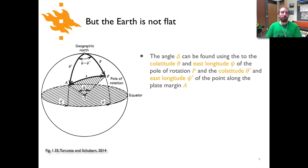In order to solve this we need to be able to figure out what this value is for the angle delta. That angle can be found using the co-latitude and east longitude. The radius is not going to be varying, but our position, our latitude and longitude or co-latitude and east longitude of both the pole of rotation and plate margin will be different.